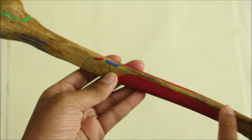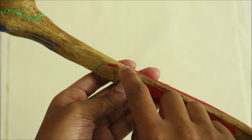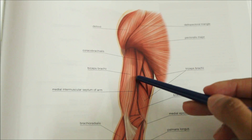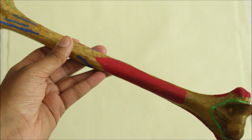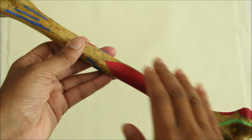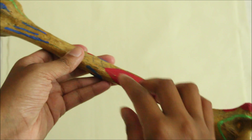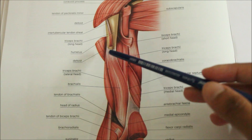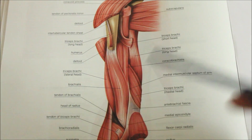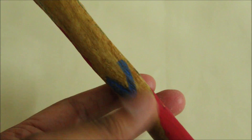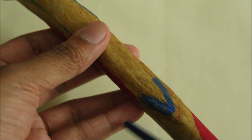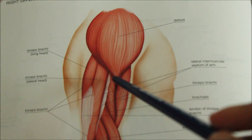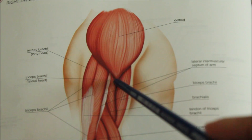Moving to the borders, the medial border gives insertion to the coracobrachialis at its middle. Moving on to the surfaces, the lower half of the anteromedial and anterolateral surfaces gives origin to the brachialis muscle. On the anterolateral aspect of the humerus, there is the presence of a deltoid tuberosity which gives insertion to the deltoid muscle.